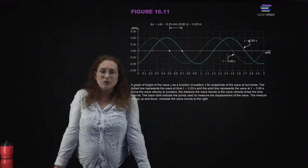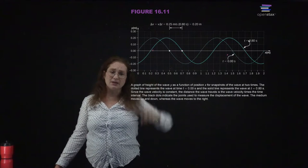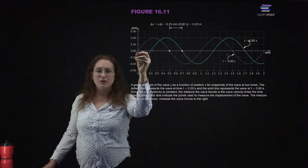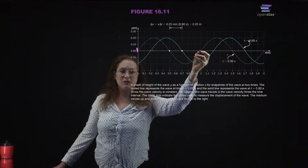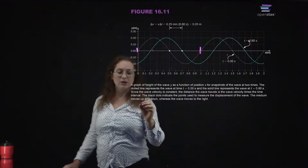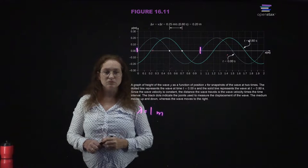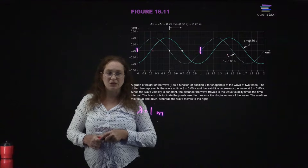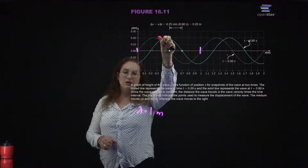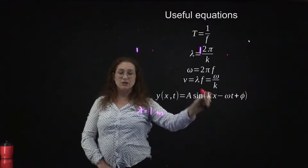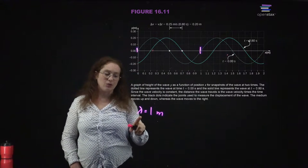Here you can take a very specific example. This is showing the height of a wave as a function of displacement X. Looking at a certain period of time, we can read off the wavelength from the T equals zero line. We can read off that the wavelength equals one meter. It tells us there are two different times, and we're going to assume the wave is traveling to the right.